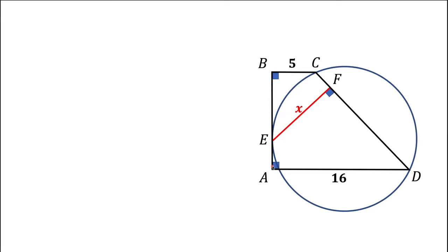We are asked to find the distance from point E to the side CD. By definition of the distance from a point to a line, that is the length of segment EF, which goes from point E to point F on the side CD, and the segment has to be at 90 degrees to CD.